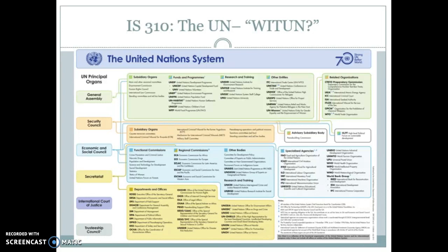There has to be some independence because it's not as if the member states are micromanaging going forward. So as we look at this map, let's pay attention to this side down the left, which are the principal organs delineated in the UN Charter. You'll see in this flowchart some of them have multiple reporting lines, along with all kinds of subsidiary organs, commissions, departments, and offices that report back into one of those main bodies. But the one that has the most reporting back to it is the Secretariat — the professional body, not the member states.